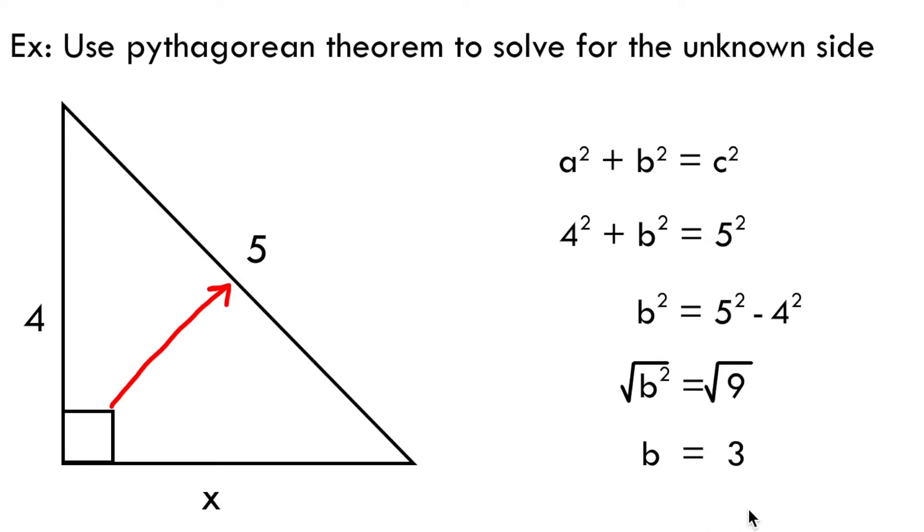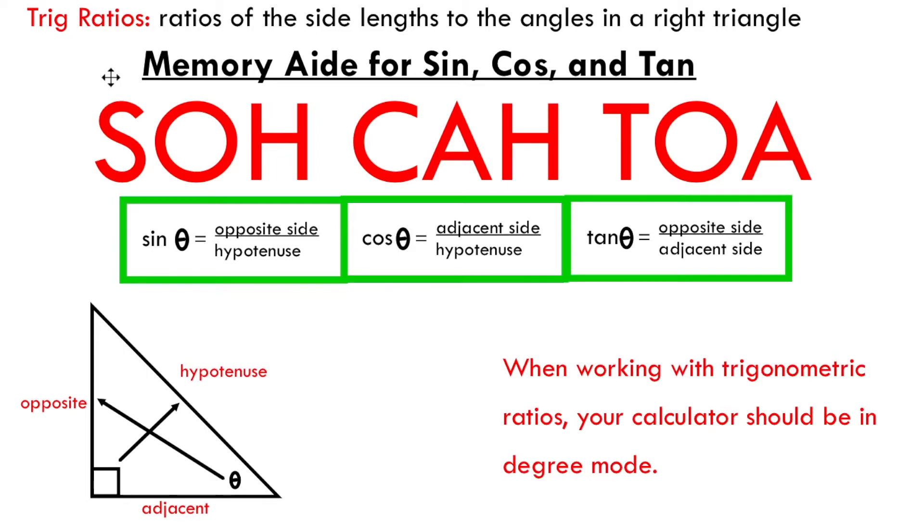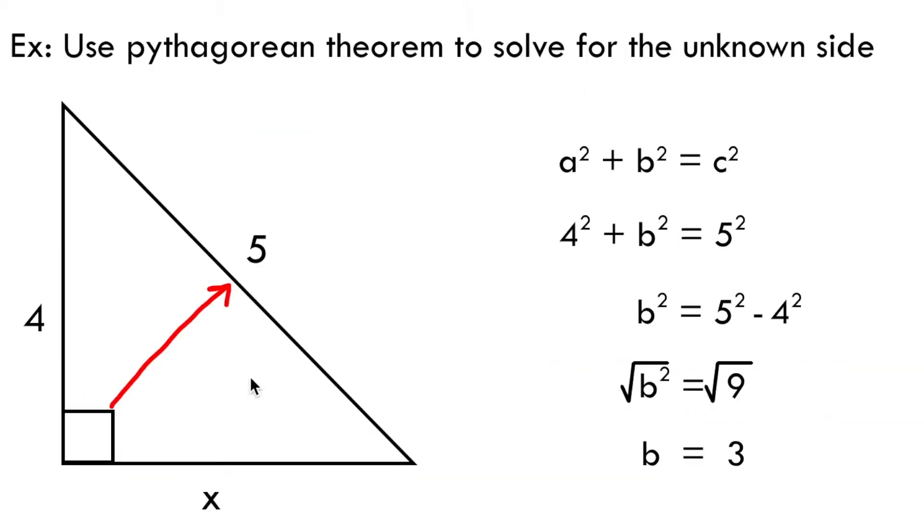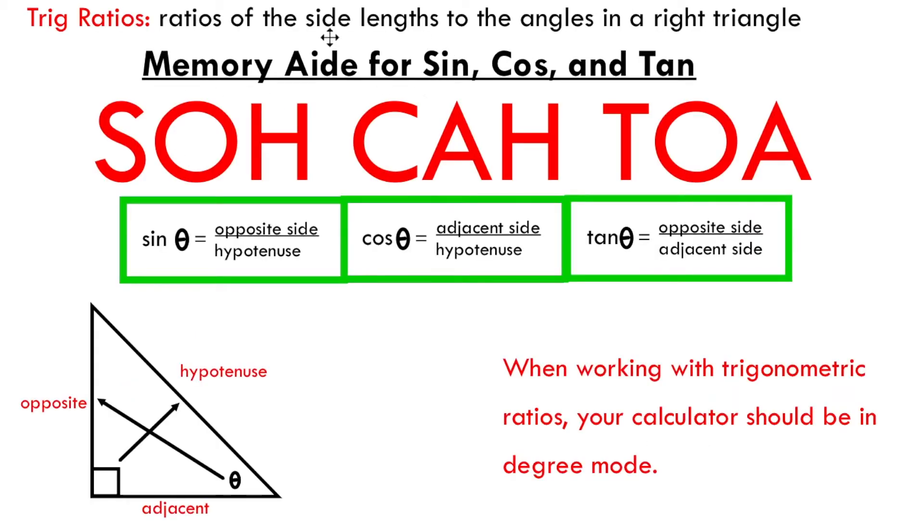But what I really want to do in this video is show you how trigonometric ratios can be used to solve problems where we're looking for a side length. Now trig ratios are a bit different from the Pythagorean theorem. They relate the side lengths in a right triangle to the angles in a right triangle. The problem that I previously just showed you, it did not have any angles, so we couldn't apply trig ratios here. But there's this really handy memory aid for three trigonometric ratios: sine, cosine, and tangent.